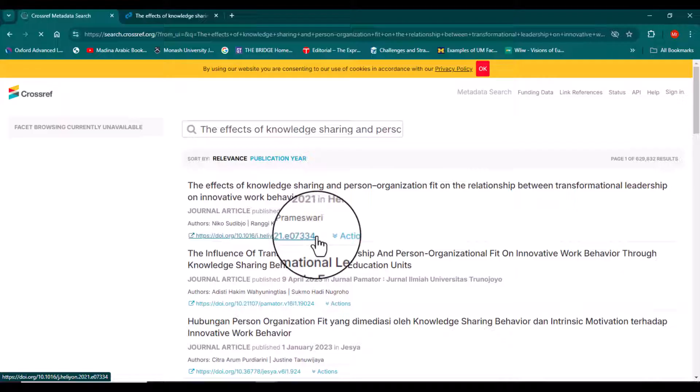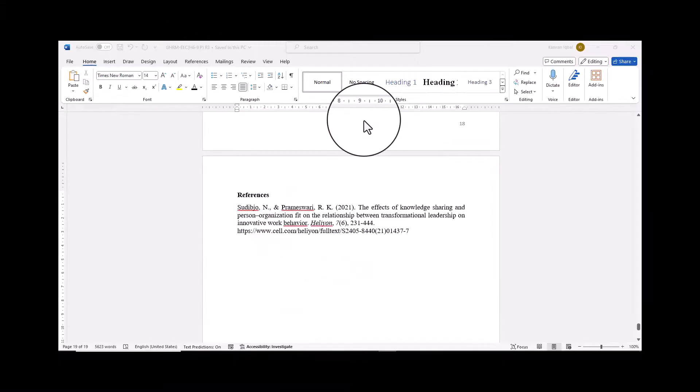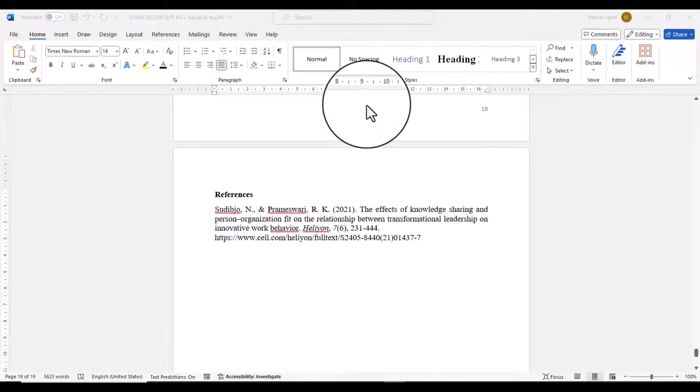If we have used all four strategies and still we are unable to locate the DOI number for a particular article, and it is the requirement of a specific journal that we must need to write the DOI number, then in that situation we can simply write the URL where we have found that particular article.